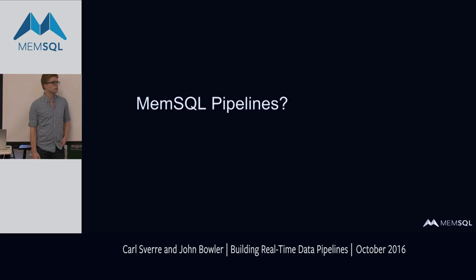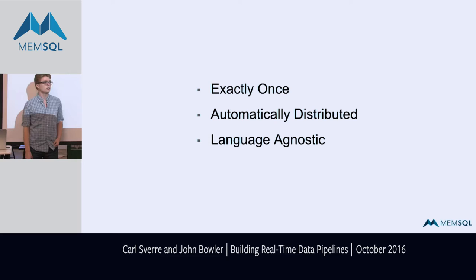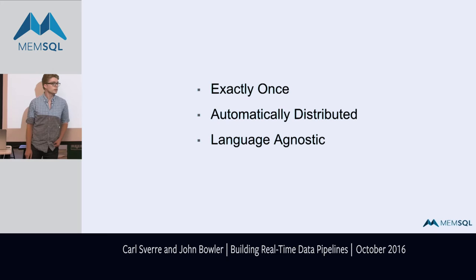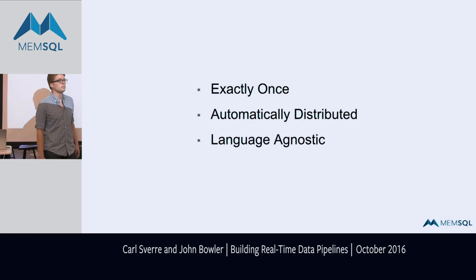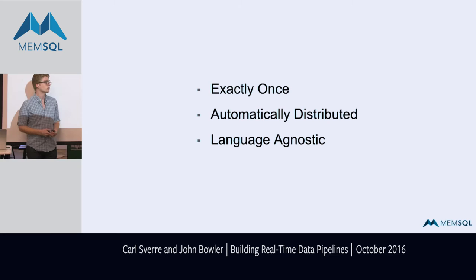We leverage unique properties of our existing system. Since MemSQL is already an ACID-compliant SQL database, we get exactly-once semantics out of the box — every micro-batch streams through within a transaction, so you won't duplicate or drop batches. These streaming workloads are also automatically distributed using the same underlying machinery we use to distribute our tables, automatically sharded across your entire cluster. And for the computation/transformation step, you can write it in whatever language you want, using whatever framework or libraries you want.